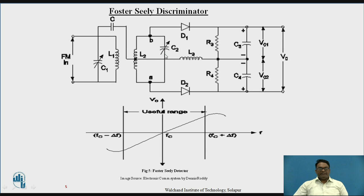A C2 capacitor, which is the variable one, is connected at the secondary winding of the circuit. The capacitor C acts as a coupling capacitor between the primary and the secondary.